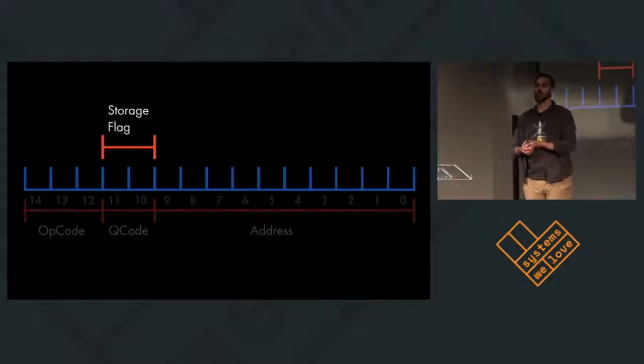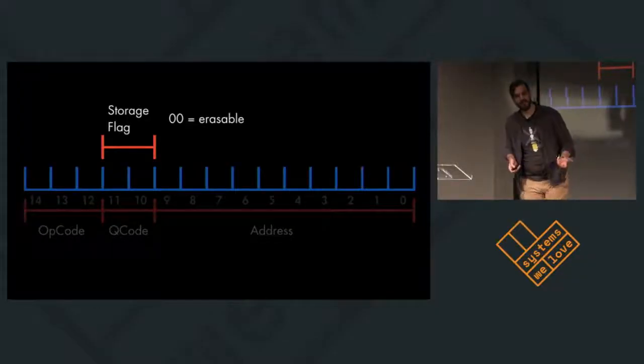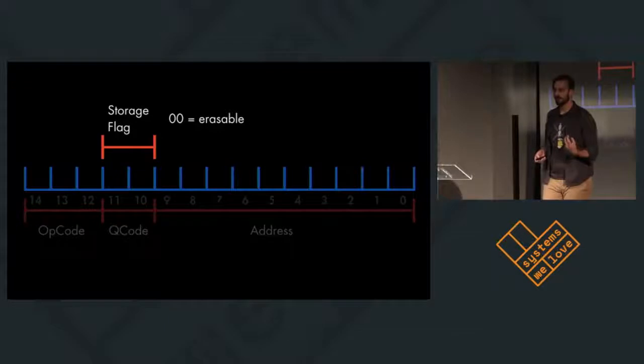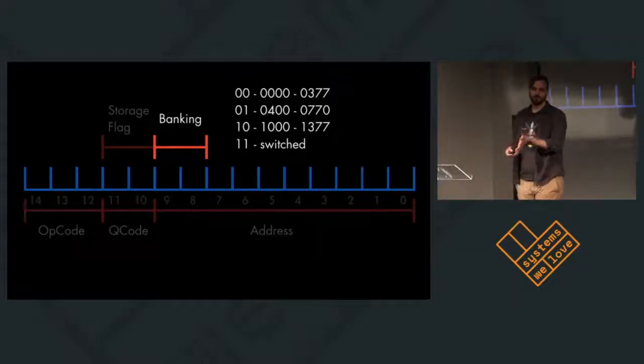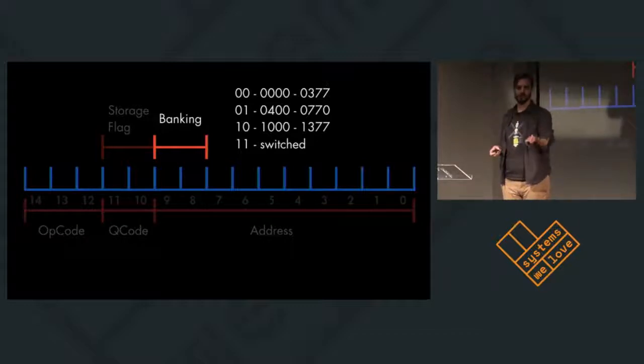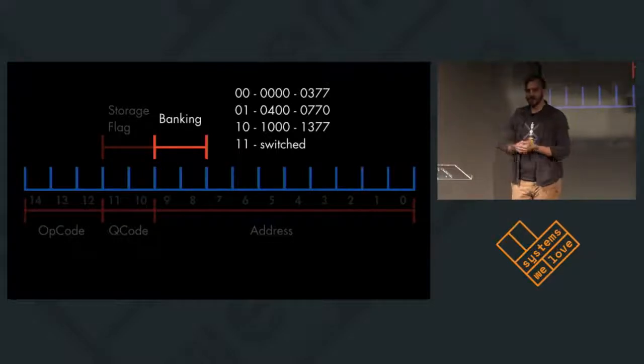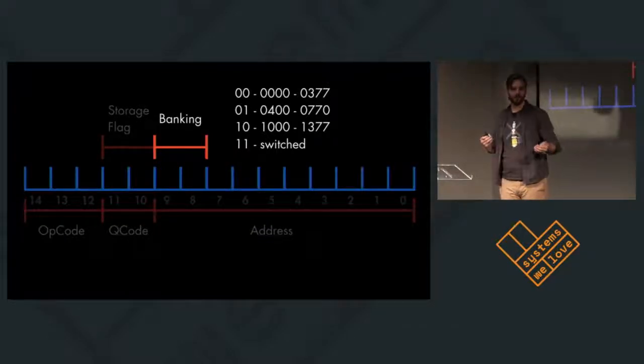And if you'll recall, the AGC has two different kinds of memory, erasable and fixed. And the fixed is in the core rope, and the erasable is just in the flat packs. So there's a storage flag. And that storage flag tells you if you're going to be using erasable memory or if you're going to be using fixed. If the value of those two bits is 0, 0, it's erasable. Now, because you don't have enough address space to reach into your addressable memory, you have to bank. So you eat up two bits out of the address, and then you decide which bank you're actually going to reach into.